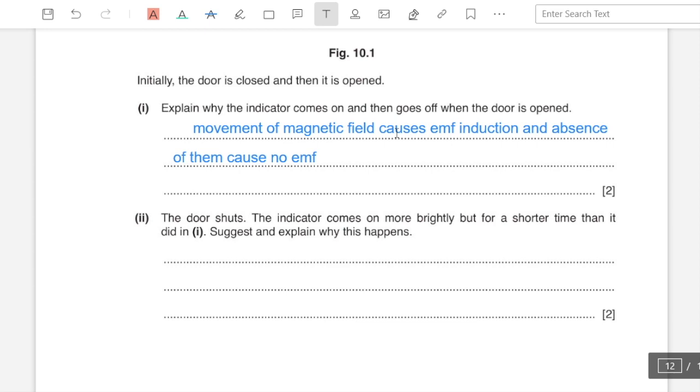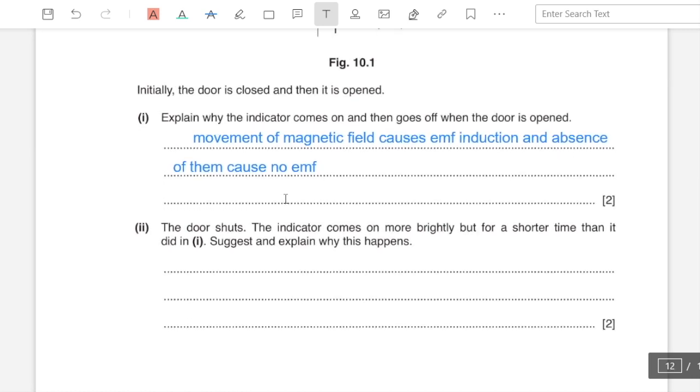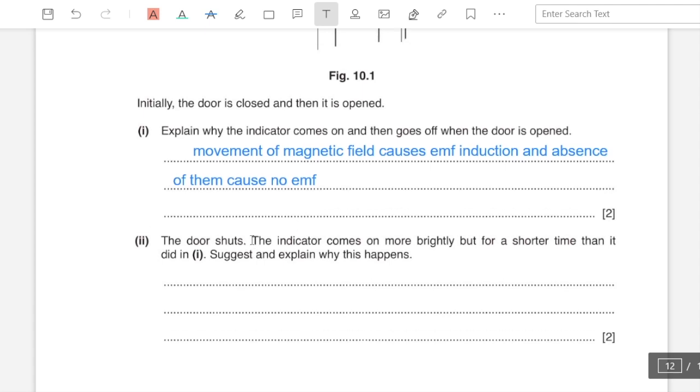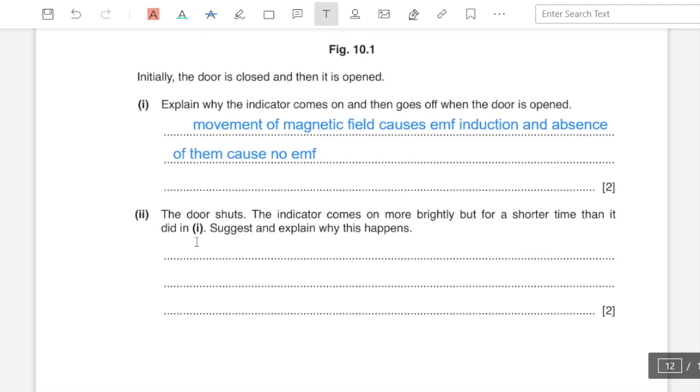Part two: as the door shuts, the indicator comes on more brightly but for a shorter time than it did in one. Suggest and explain why this happens. Maybe the door is being shut with greater force, and that would mean a higher emf induced but for shorter time since the force is larger. It would take less time to move and get closed.